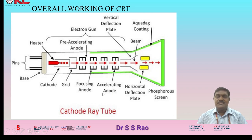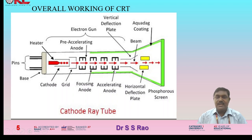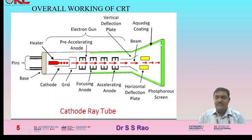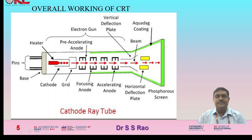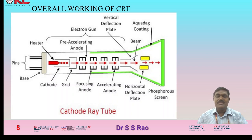In detail about the cathode ray tube: the base and pins are explained, along with the cathode, heater, and electron guns passing through the grid. In series are the focus anode, pre-accelerating anode, focusing anode, accelerating anode, vertical deflection plate, and horizontal deflection plate. These two deflection plates control the deflection of electron beams striking the phosphor-coated screen. The aqua-dag coating is provided up to a certain point. CRT screens are very bulky and were used in older days to display images on monitors.